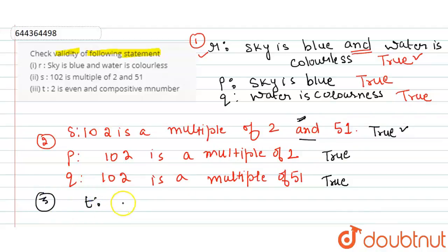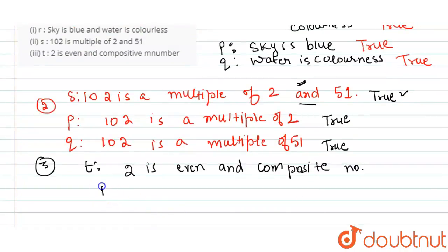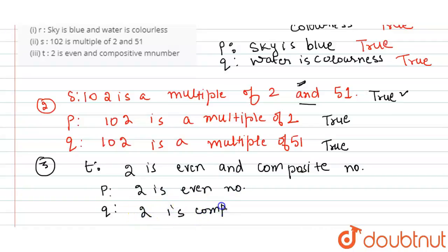The third statement T is: '2 is an even and composite number.' The component statements are: P — '2 is an even number', and Q — '2 is a composite number'. An even number is divisible by 2, so 2 is even — statement P is true.